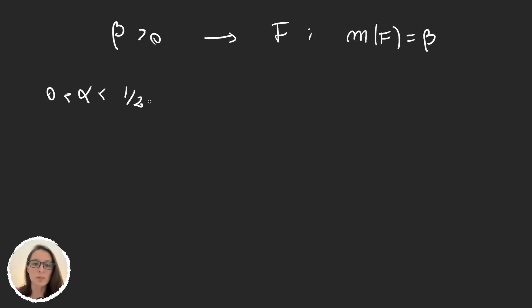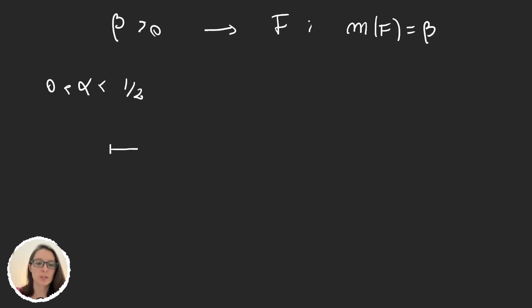So what we will do is we will start with a unit interval like we did so far and we will call this set F₀. So our idea will be now to remove some part of the set and then call this part F₁.